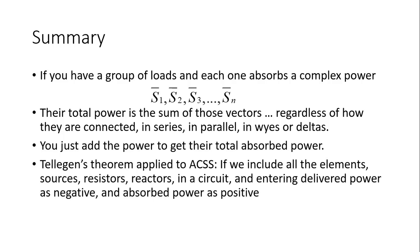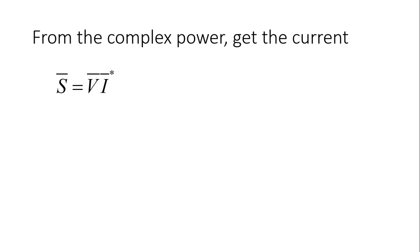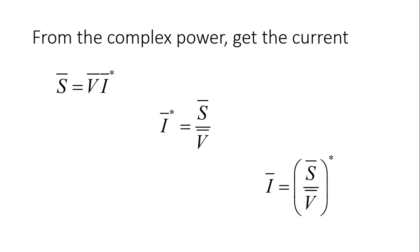Tellegen's theorem applied to AC steady state would read: if we include all the elements in a circuit — sources, resistors, reactors — and we enter the delivered power as negative and the absorbed power as positive, then the sum of all the complex power in the circuit must be zero. If we know the complex power in an element and we know the voltage as well, we can compute the current. Remember Steinmetz's formula: the complex power is the RMS phasor for voltage multiplied by the RMS phasor for current conjugate. From there we can solve for the conjugate of the current, and then take the complex conjugate on both sides to get the current itself.